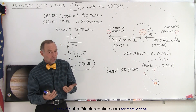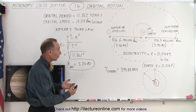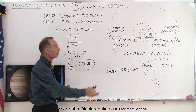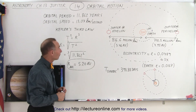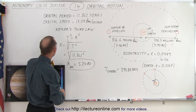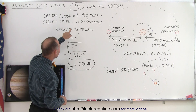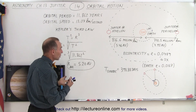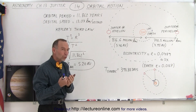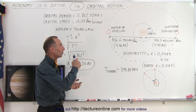The planet Jupiter, just like all other planets in the solar system, revolves around the Sun. For Jupiter, the orbital period is 11.862 years, so almost 12 years to make one trip around the Sun.